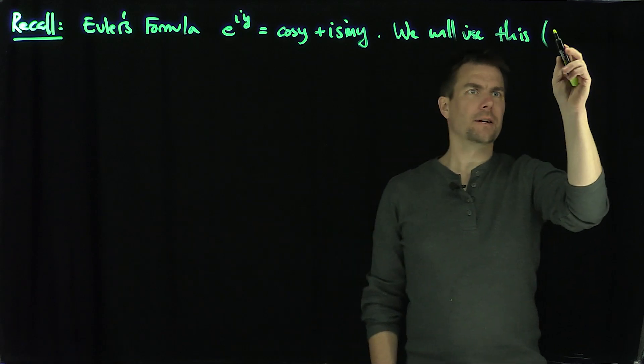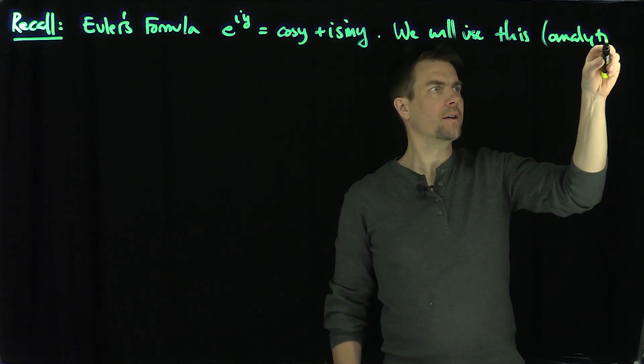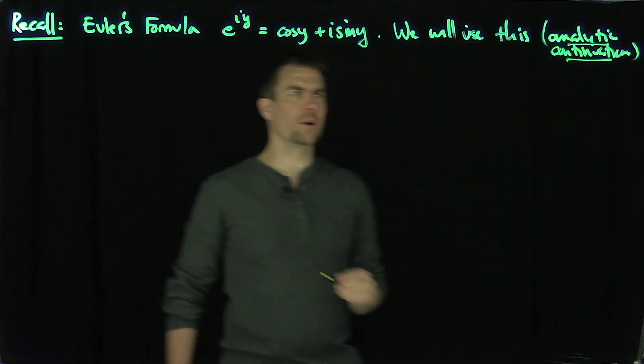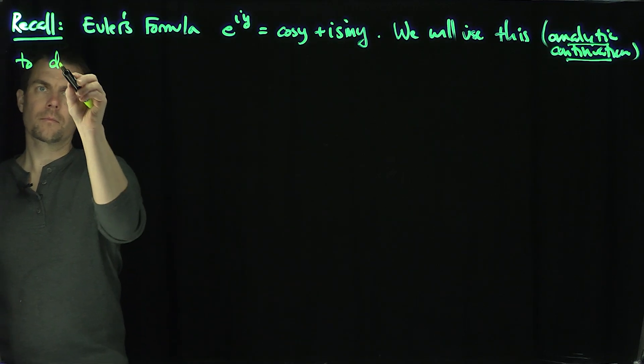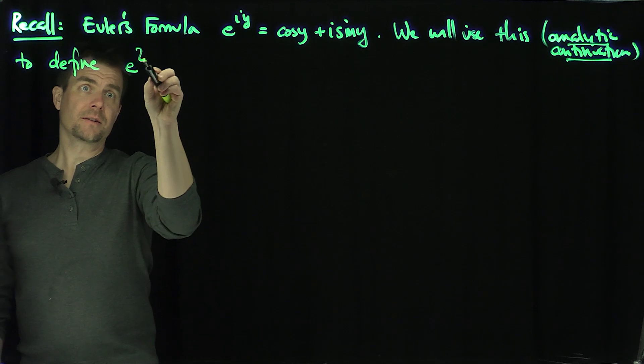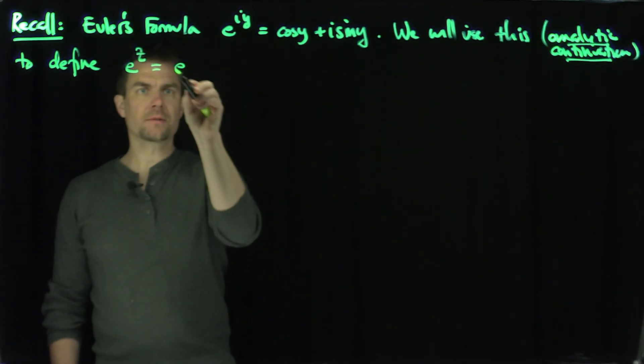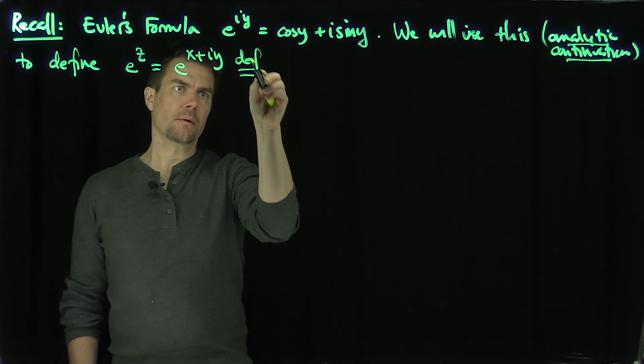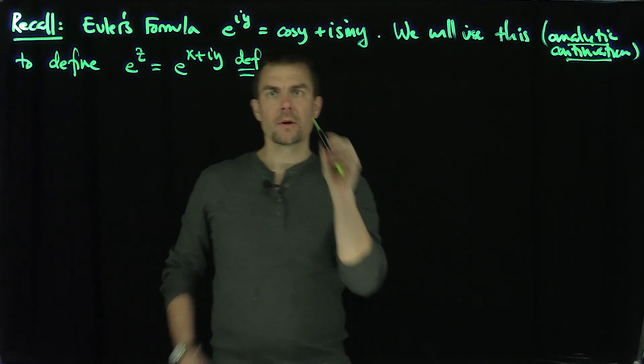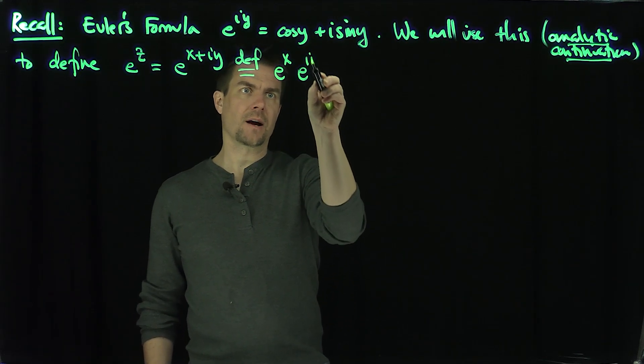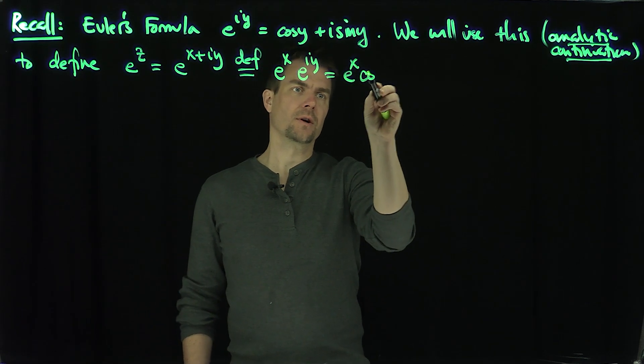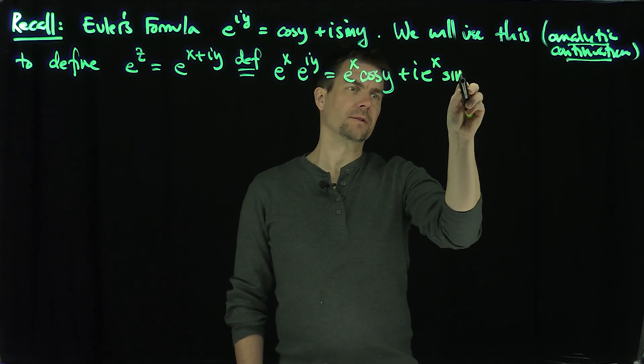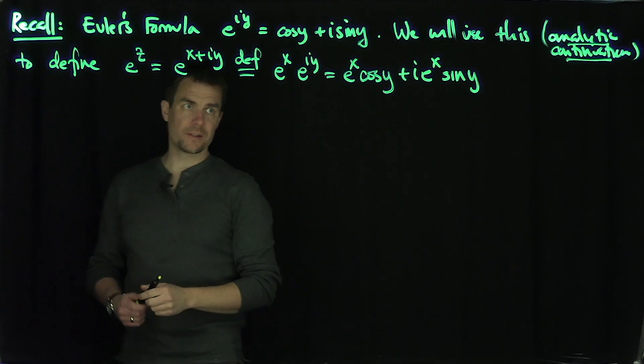Analytic continuation, which we'll discuss and link later, makes sense of this. We define e^z, which is e^(x+iy), to be by definition e^x times e^(iy), which is e^x times cosine y plus i times sine y. That's the definition of what e^z is.